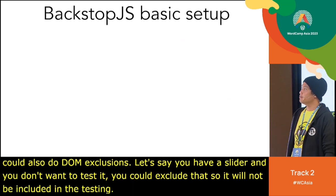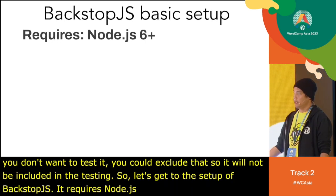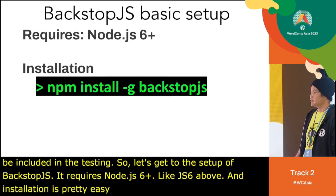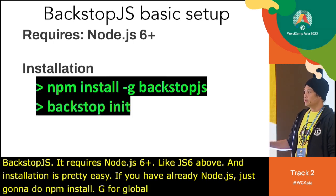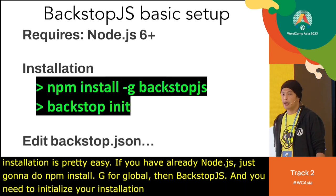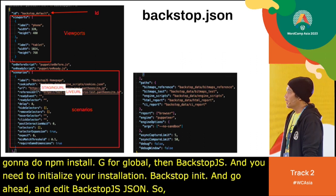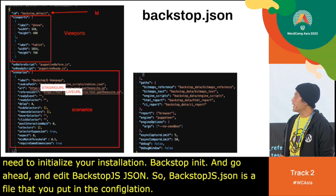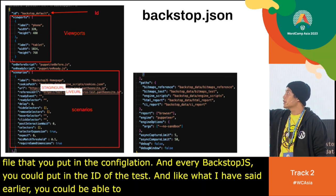Setting up BackstopJS requires Node.js 6 or above. Installation is easy: run npm install -g backstopjs. Then initialize with backstop init and edit the backstop.json file, which is the configuration file where you define your test settings, including the test ID and different viewport configurations.